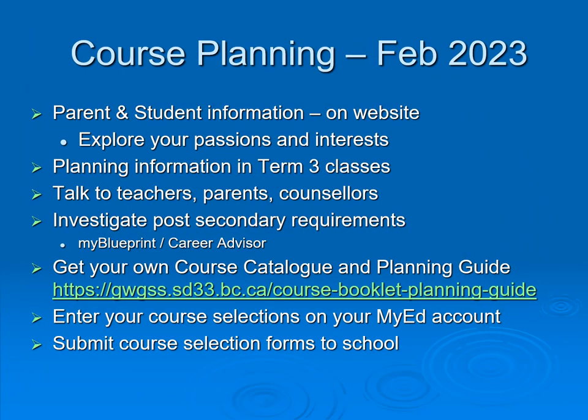Course planning takes place in the month of February. Parent and student information can be found on the website. Please take this time to explore your passions and interests. Planning information will be coming in Term 3 classes, and we want students to talk to teachers, parents, and counselors. Investigate post-secondary requirements by checking your Blueprint or talking to the career advisor. You can get a copy of your own course catalog and planning guide by downloading it from the GW Graham website.